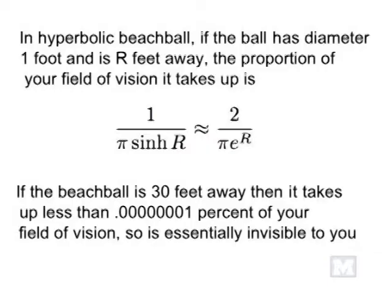In hyperbolic space, your field of vision out at radius r is much bigger — roughly pi over 2 times e to the r. So if the beach ball is 30 feet away in hyperbolic space, it takes up about 0.0000001% of your field of vision. You can't possibly see a beach ball 30 feet away in hyperbolic space. Assuming you can see things down to about 0.01%, that beach ball becomes visible only when it's about seven feet from you.